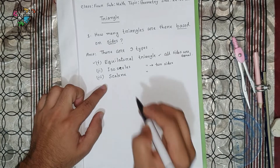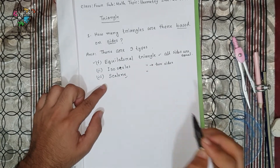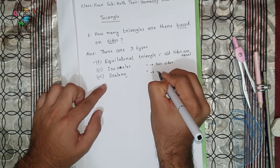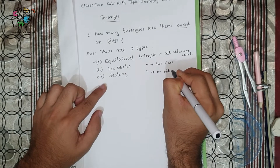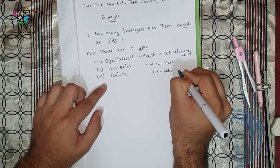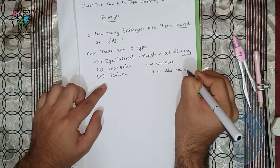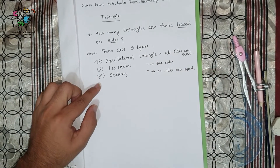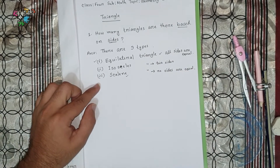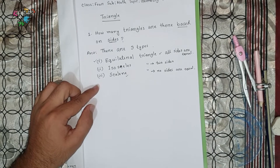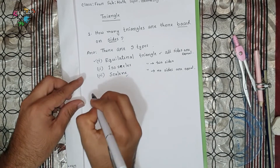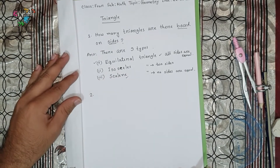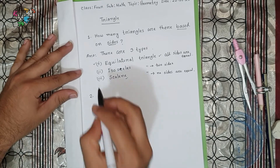And what is a scalene triangle? If no sides are equal, then it is called a scalene triangle. All right, and there are another three types of triangle based on angles.